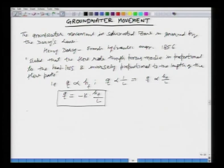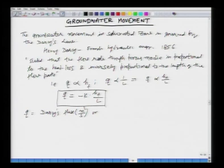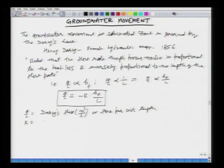In this equation, q is known as the Darcy's flux, with units of L²/T or meter squared per second in SI units. It is also called the flow per unit length of the aquifer or porous medium perpendicular to the cross-section. K is the constant of proportionality, later defined as the hydraulic conductivity.